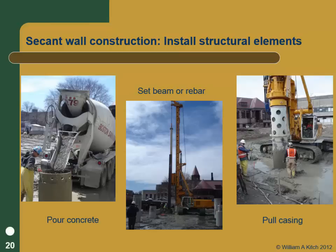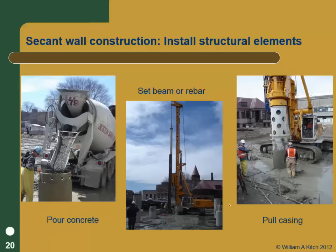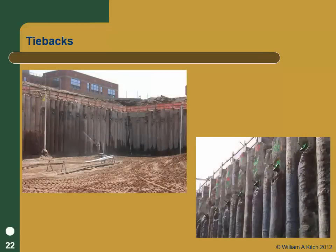The completed secant pile wall shows corner braces for support in this example. Tiebacks can be installed by drilling right through the secant or tangent piles. For diaphragm walls, tieback locations are often pre-located with lookouts or holes cast in the wall. For secant/tangent piles, you're always limited in concrete strength because you'll be drilling through some of them — you don't want really hard concrete. But you can put tiebacks in by just drilling right through them.